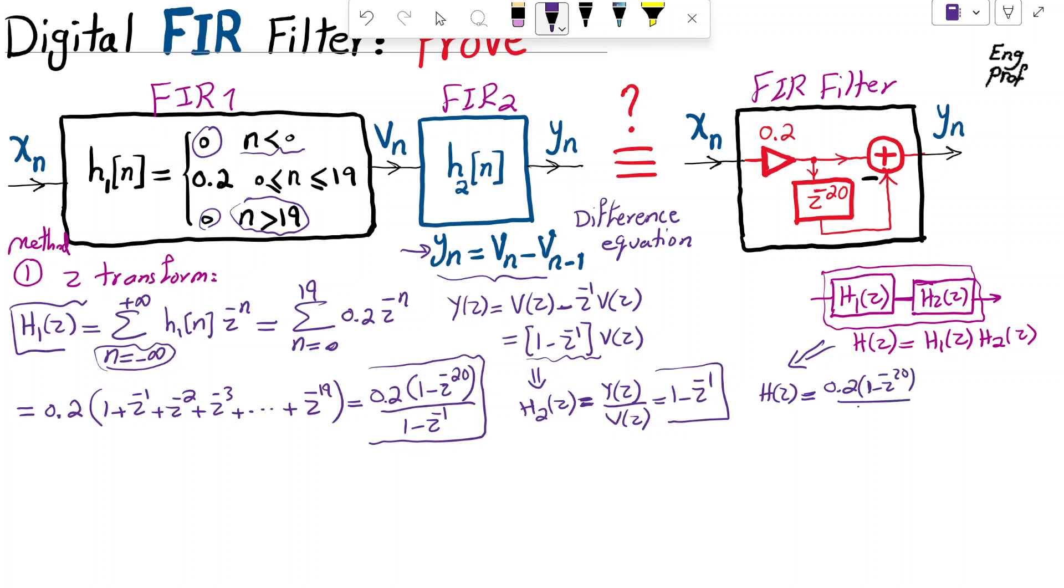is 0.2 1 minus Z minus 20 divided by 1 minus Z minus 1, that's H1, times 1 minus Z minus 1, that's H2. These two cancel out each other. And then as a result, what remains is just this portion.